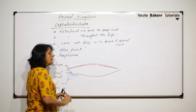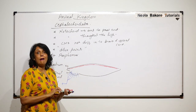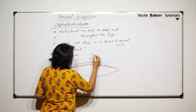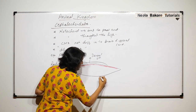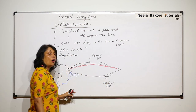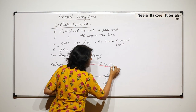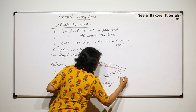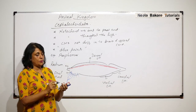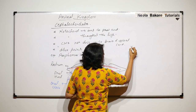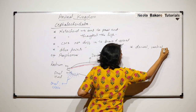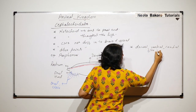The notochord, which is a dorsal solid notochord, is present from anterior to posterior end, all along the length. Amphioxus also has fins: a dorsal fin, a ventral fin which is smaller, and a tail fin or caudal fin. So dorsal, ventral, and caudal fins are all present.